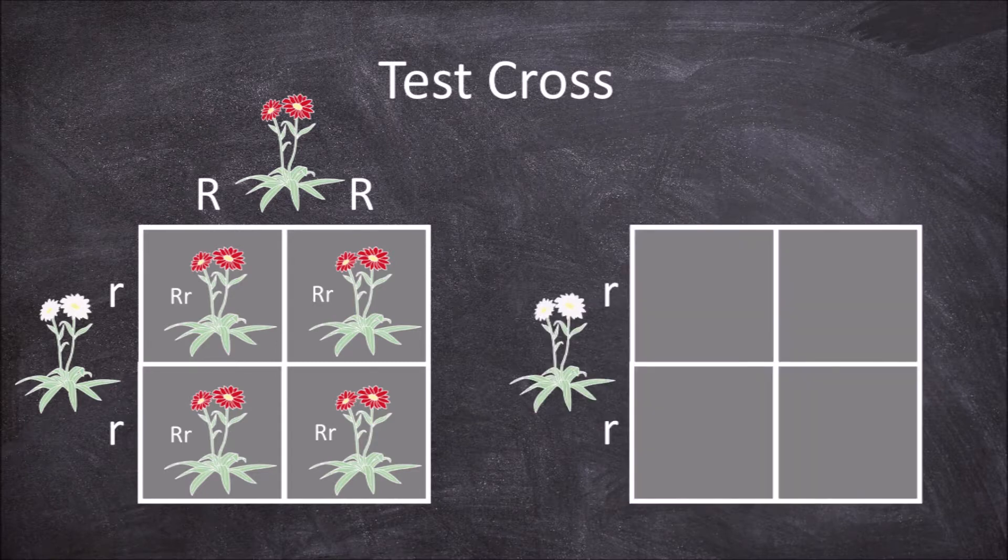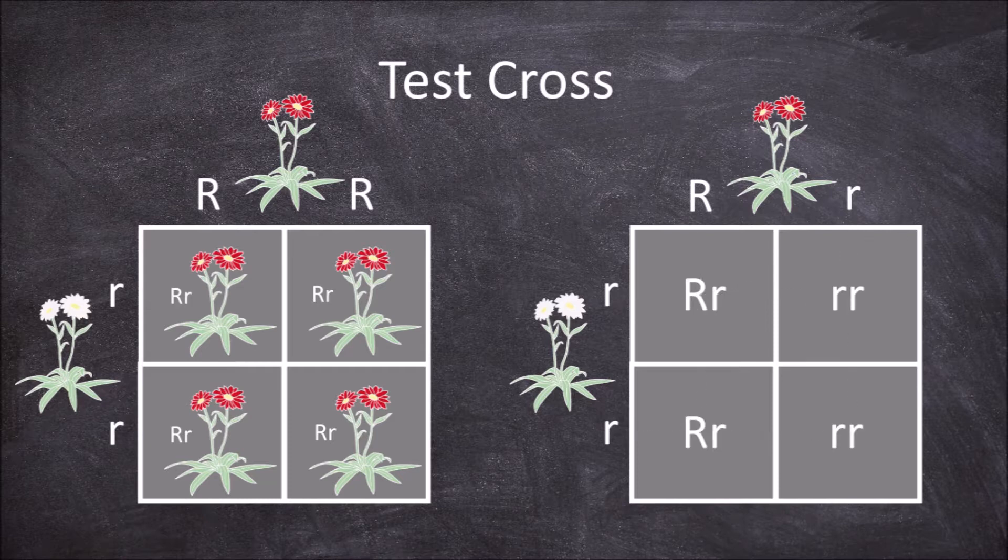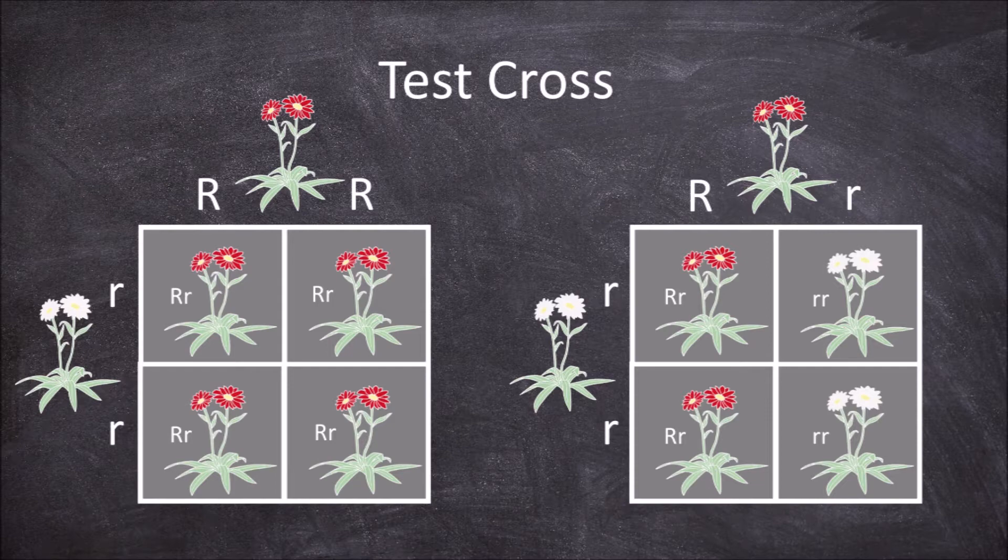If it was heterozygous big R little r and we use a second Punnett square, we can see from this cross that it would produce offspring that have red flowers but it also produces offspring that have white flowers.